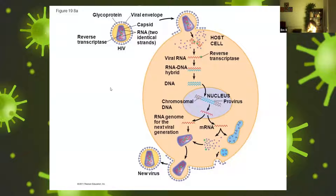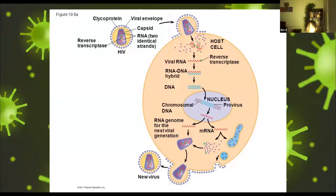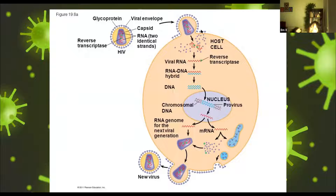Here is an example of a retrovirus life cycle. This is an HIV molecule: you have receptor proteins, the envelope, the capsid, and RNA. It first attaches to the cell and releases all of its contents. The viral RNA goes through reverse transcriptase and turns into DNA, the DNA goes into the nucleus and forms a provirus, and then new proteins are formed.